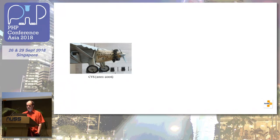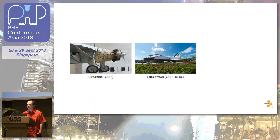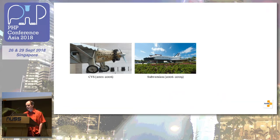CVS was a step up from RCS in that it had network capabilities and multi-user support, but it was not really nice to work with. I chose it for PHPUnit because I knew it from the PHP project and it worked. From 2001 to 2006 I used CVS — CVS.php.net in fact. Then in 2006 I migrated to Subversion, which was a huge step up. Suddenly branching was painless, though merging not so much. In CVS, branching and merging was broken or unusable; in Subversion at least 50% of that was not broken.